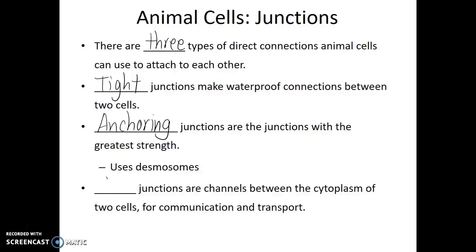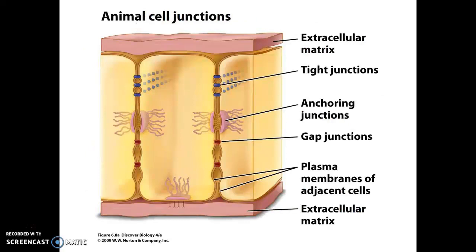The last type of animal junction are gap junctions. Gap junctions are channels between the cytoplasm of two neighboring cells and allow for materials to pass between the cytoplasm of those two cells. The tight junctions provide a solid connection that prevents water from passing across the tissue, anchoring junctions are the strongest and have visible desmosomes under a microscope, and gap junctions are similar to transport proteins — connecting the cytoplasm of two neighboring cells by passing through two layers of cell membrane.